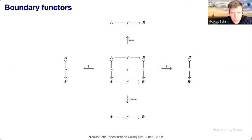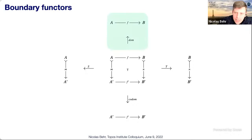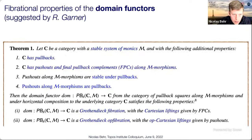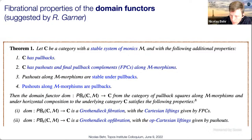We have four kinds of boundary functors: domain and codomain for vertical composition, source and target for horizontal composition. The idea of searching for fibrational structures was sparked by an observation from Richard Garner on the structure of the domain functor for the category of pullback squares with horizontal composition. Under some assumptions, this domain functor is simultaneously a Grothendieck fibration (with Cartesian liftings given by FPC squares) and a Grothendieck op-fibration (with op-Cartesian liftings given by pushouts).